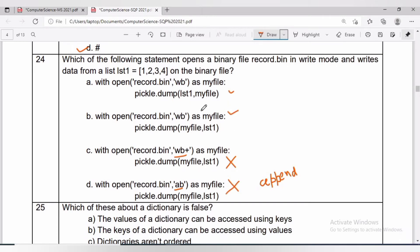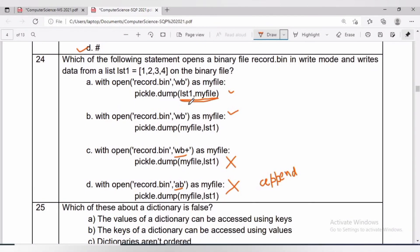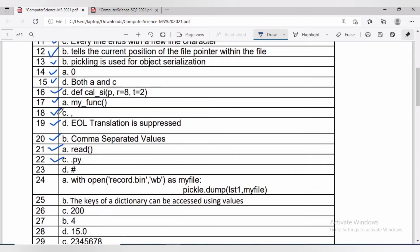The syntax is: pickle.dump(object to be written, file handle of open file). The correct answer will be A. Here, object list is being written on file opened with file handle myfile. Now we can check the answer.